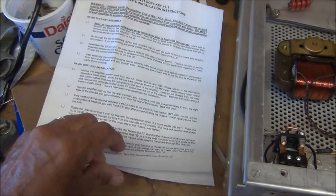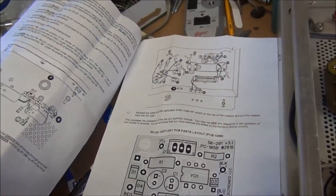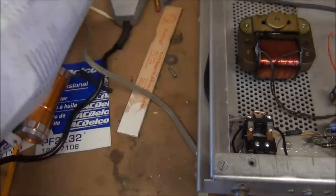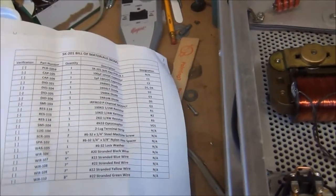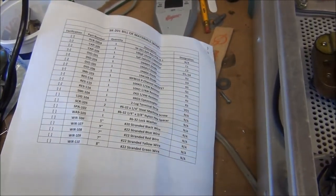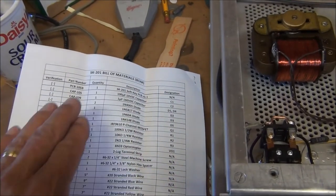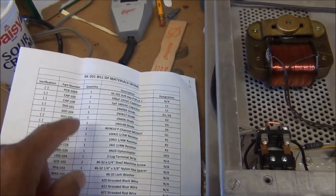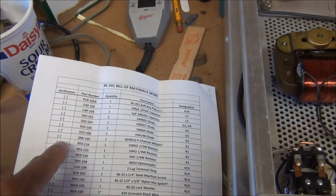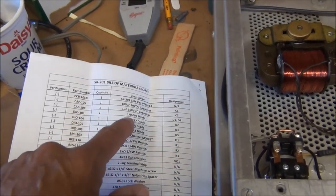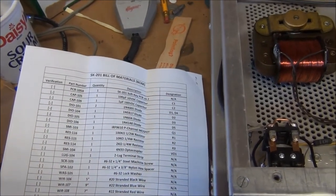He sends you a four-page instruction part list sheet. So here's the part list, you check to make sure you've got all the parts before you start. What I ended up doing is installing the parts and just checking them off in the little box as I installed them and made sure I had the right component for each location.